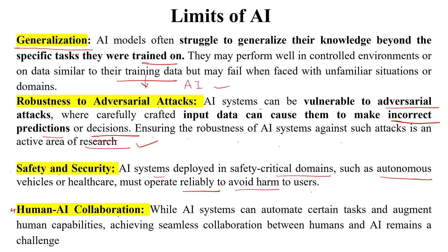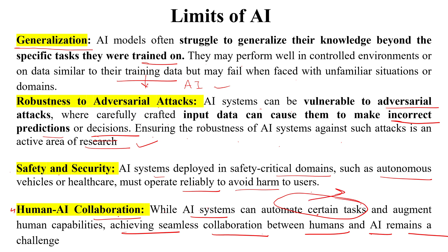The next limit is human-AI collaboration. While AI systems can automate certain tasks and augment human capabilities, achieving seamless collaboration between humans and AI remains a challenge. AI systems augment what users normally do and also augment human capabilities, but seamless collaboration between humans and AI is still a challenge.